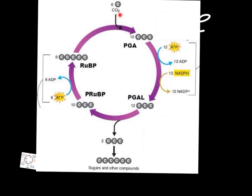If you look at the very first portion, we've got six five-carbon molecules. Six times five gives us 30 total carbons. What we add at the top is six CO2. Six CO2 has a total of six carbons, because each CO2 molecule only has one. So what that gives us eventually is twelve three-carbon molecules — twelve times three is thirty-six. So the thirty carbons from RUBP plus the six carbons from CO2 gives us the thirty-six carbon PGA molecules.